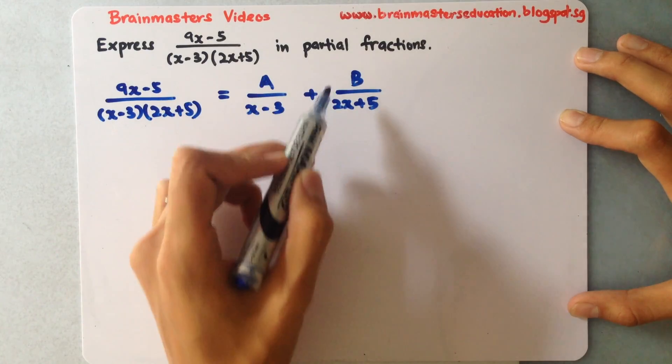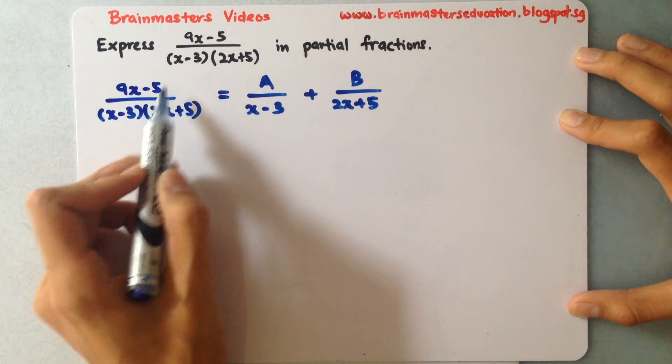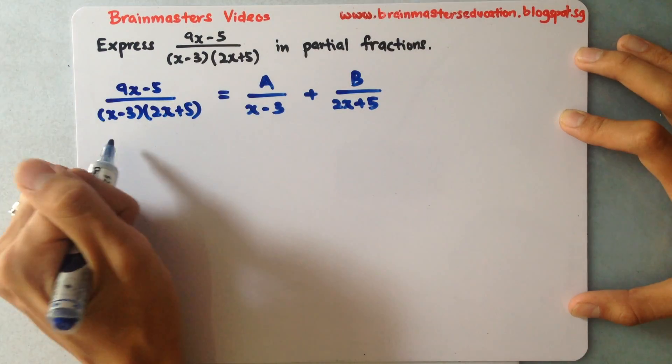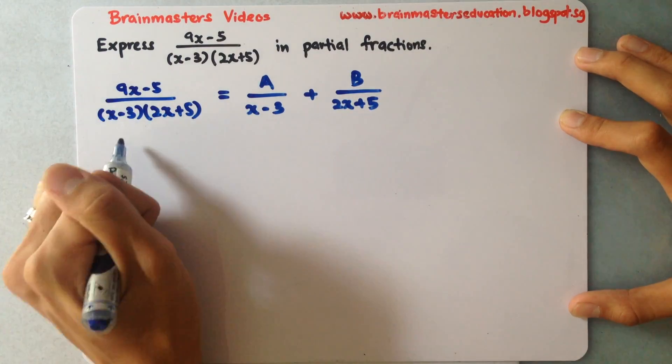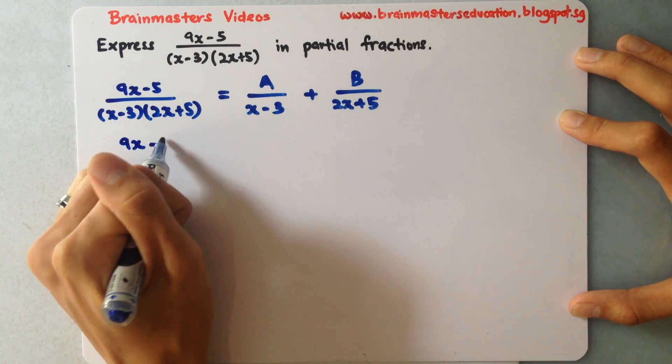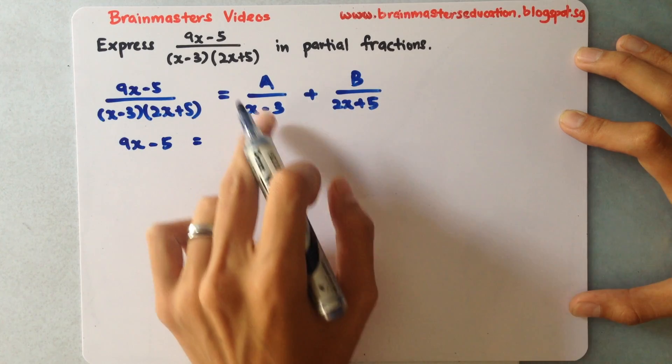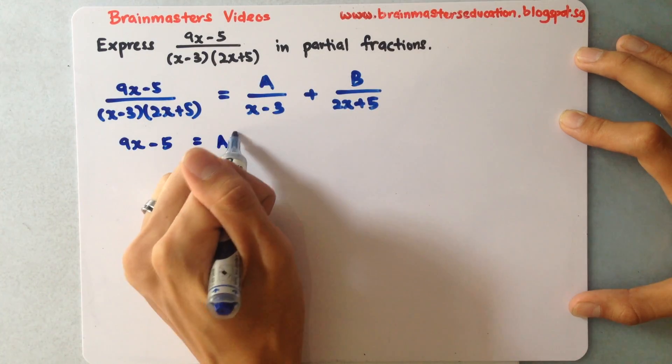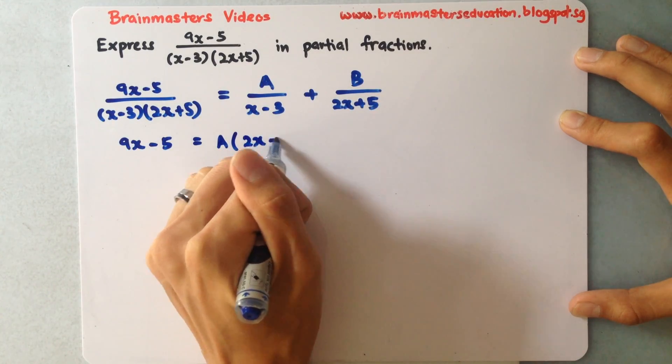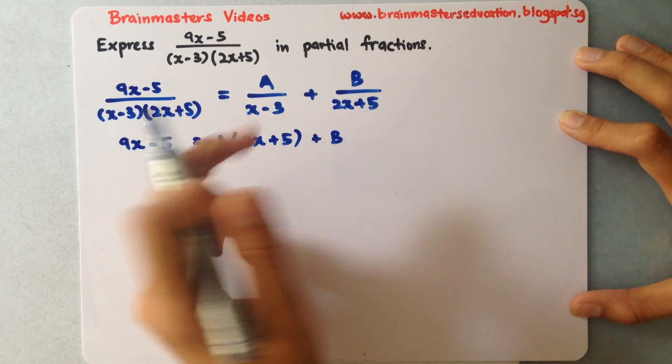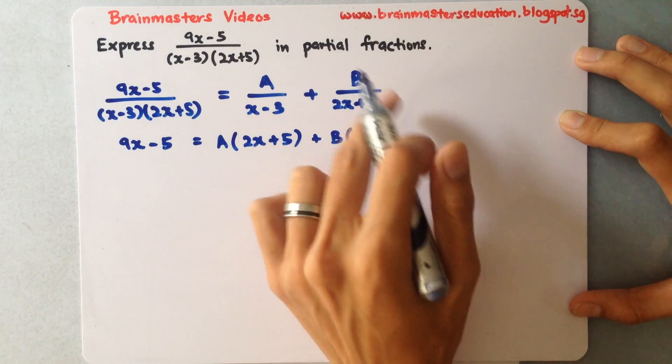What we need to do is cross multiply to make the denominator the same so as to get the numerator the same. When I do this, I'll write down the numerator on the left-hand side which is 9x-5. This I will multiply by (2x+5), so I have A(2x+5), and this will be B multiplied by (x-3).